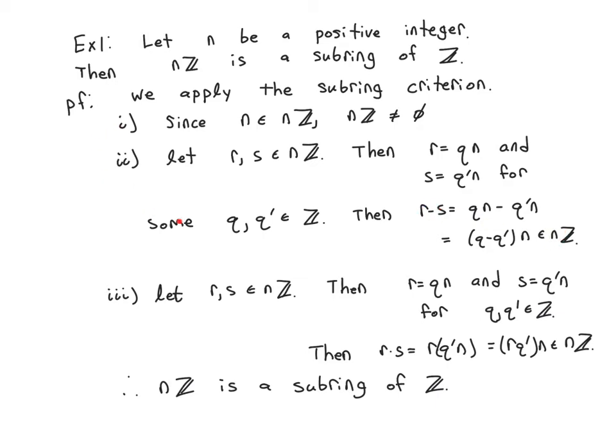So R minus S is in NZ. These two facts together tells us NZ is an additive subgroup of Z, which we already knew from before anyhow. So we just need to check the other property. Let R and S be multiples of N. Then this means R and S are of the form QN and Q prime N for Q and Q prime in Z.